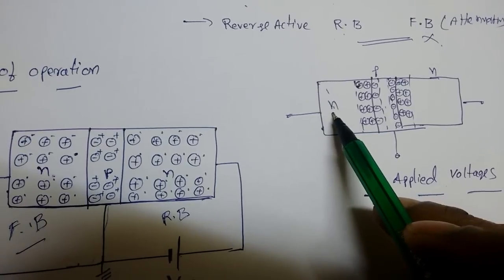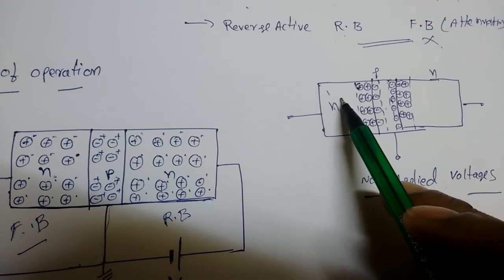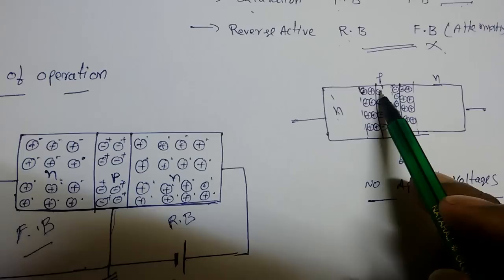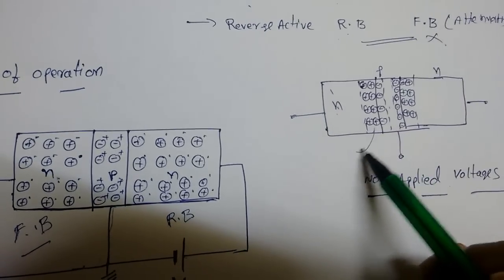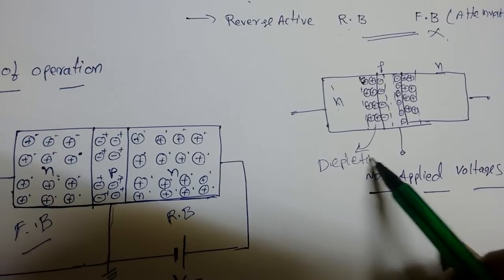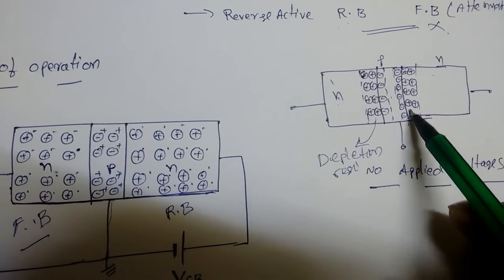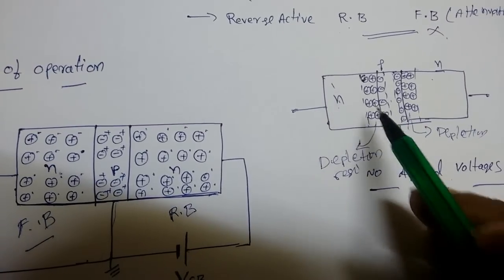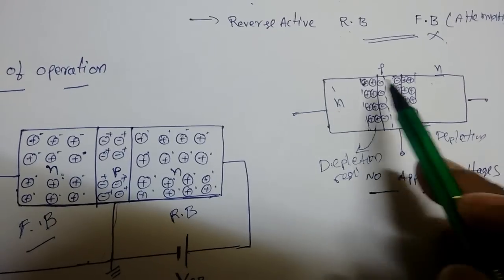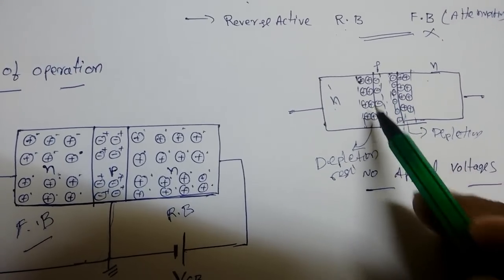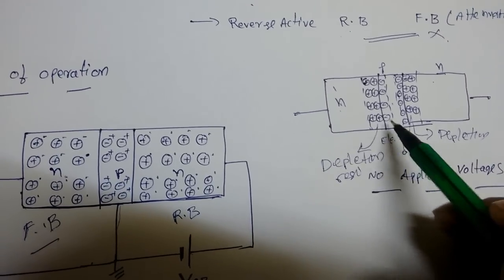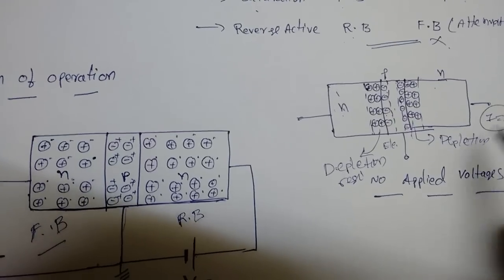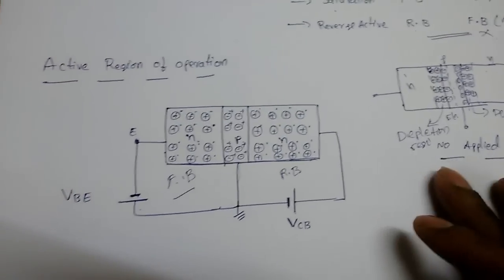Before seeing current flow, we look at the NPN transistor under no bias. The heavily doped N-type emitter causes electrons to diffuse into the base, losing electrons on the emitter side and consuming holes on the base side, forming a depletion region at the emitter-base junction. Similarly, a depletion region forms at the collector junction. This built-in electric field opposes further movement of carriers, so current is zero under no bias.